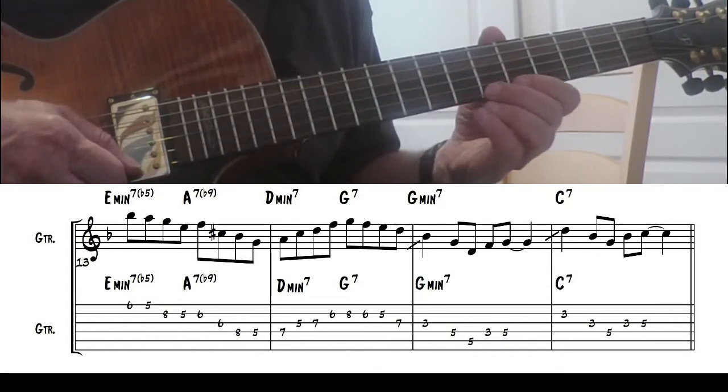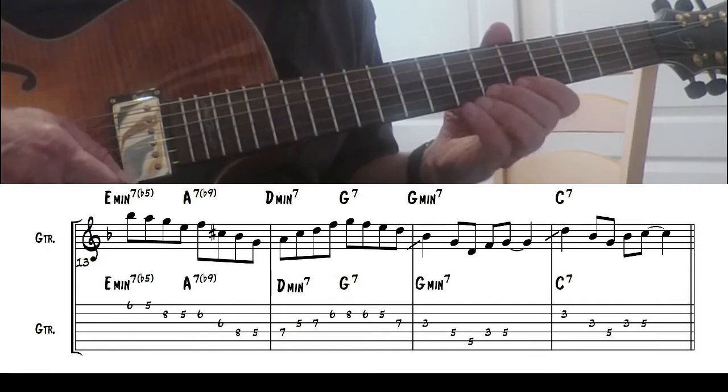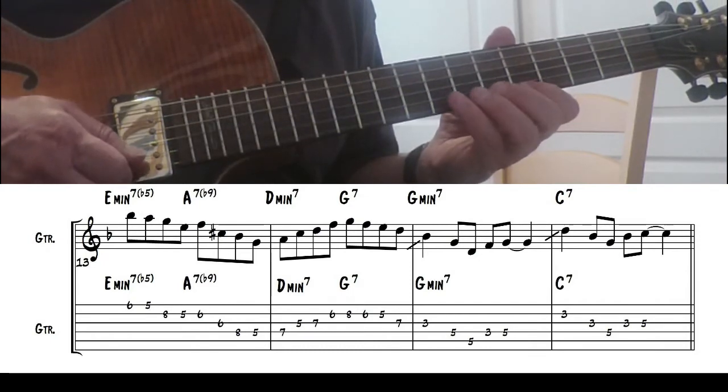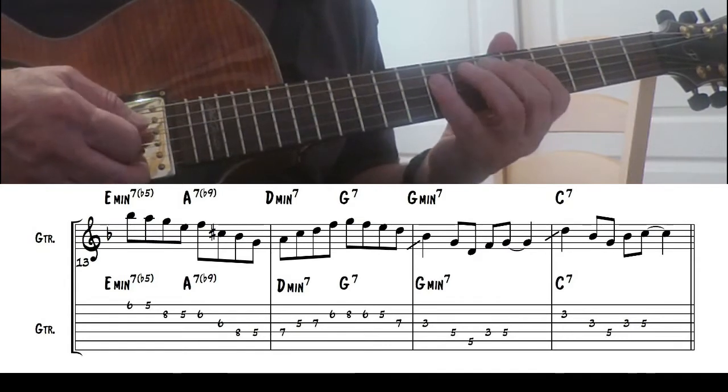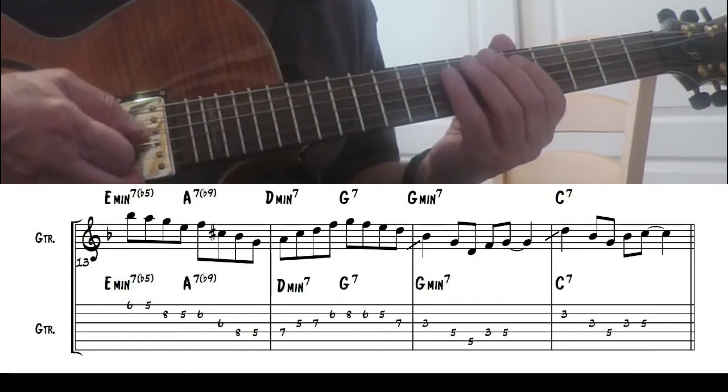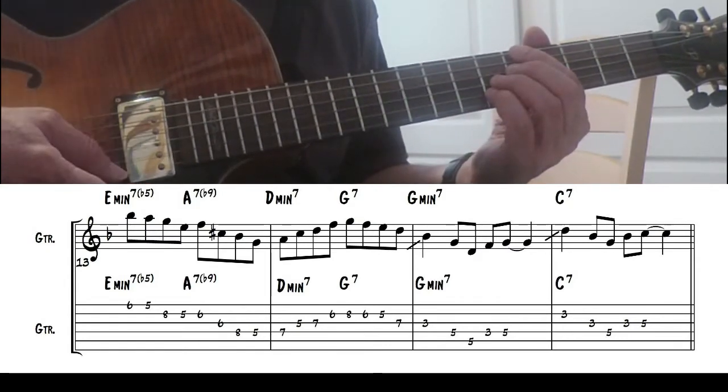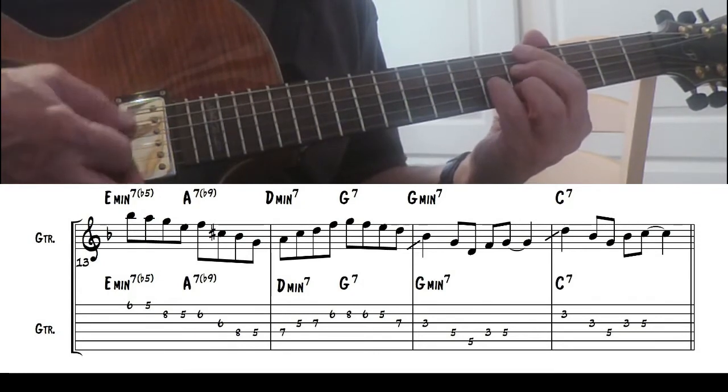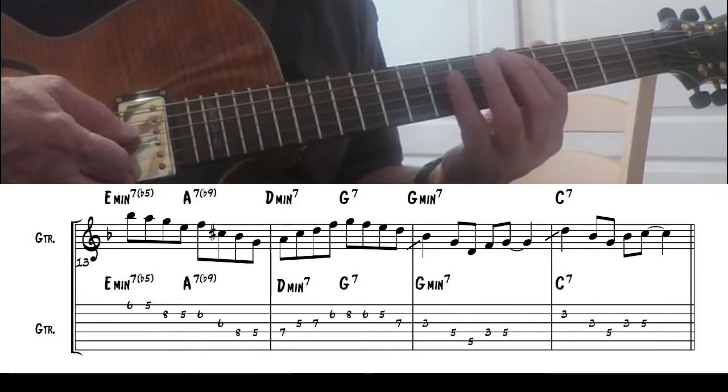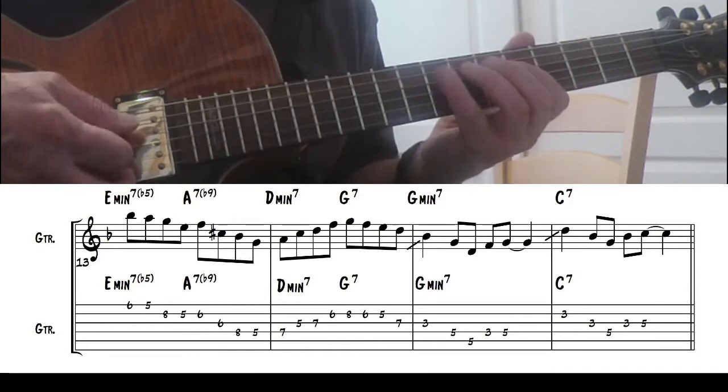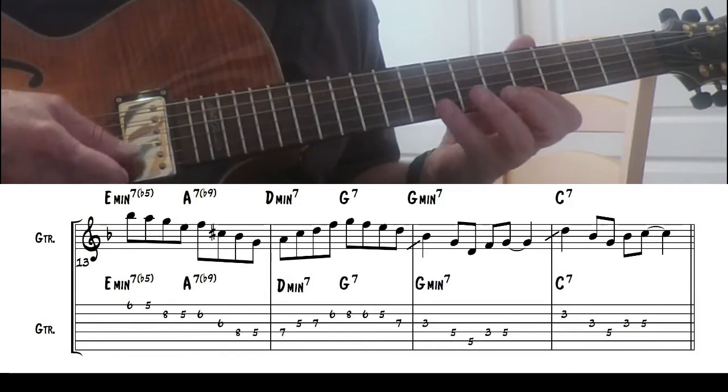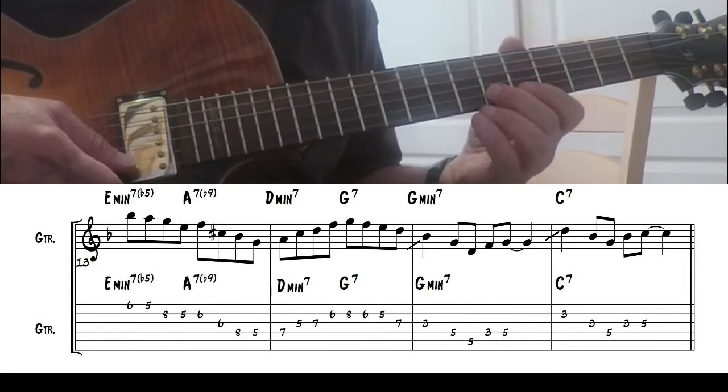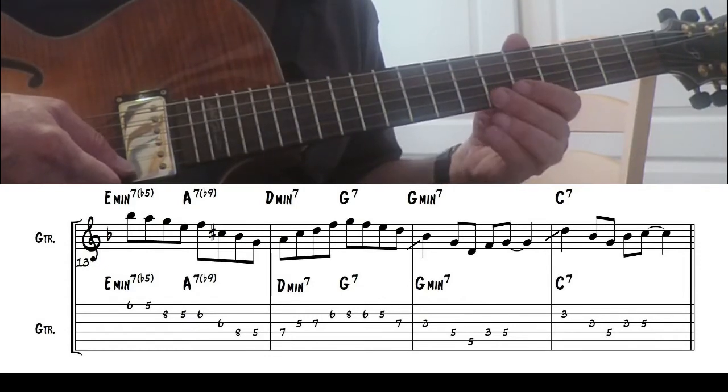So the Bb is the 5th. 5, 4, 3, 1. And that comes out of the 5 of the D harmonic minor. Which also gives you this b13, right? b13 and b9.